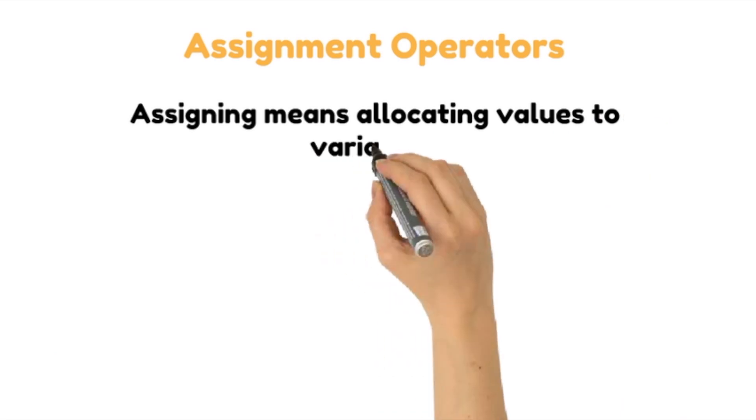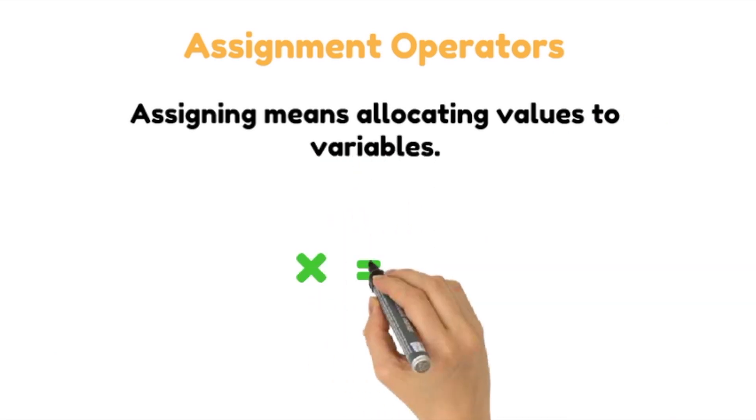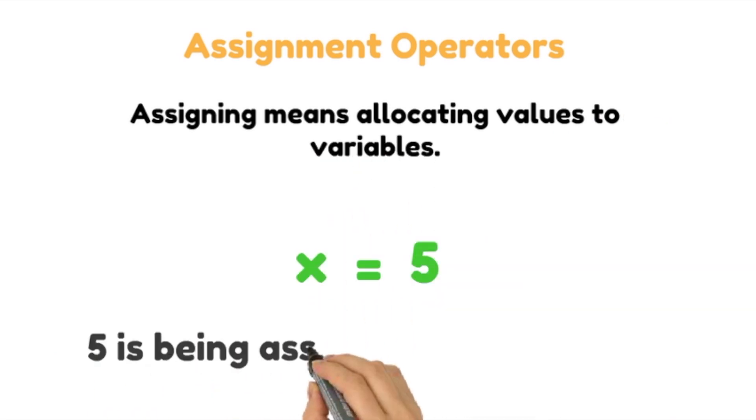Let's talk about assignment operators. Assigning means allocating values to variables. Let's say we declare x equal to 5. This means we are assigning the value 5 to variable x. This is the simplest form of assignment operator.